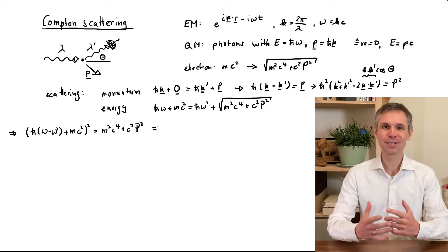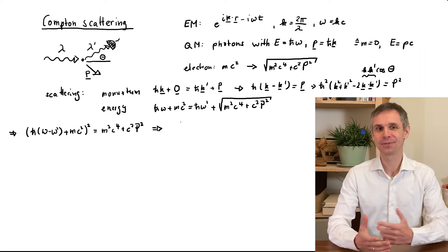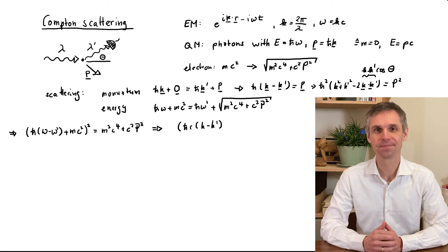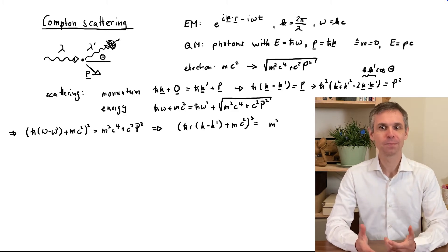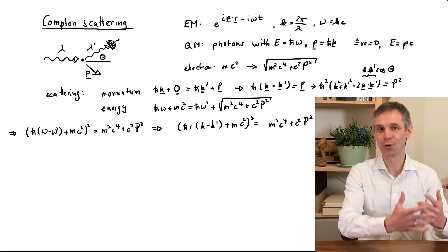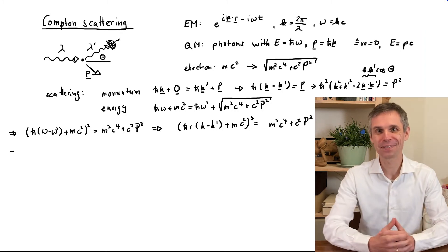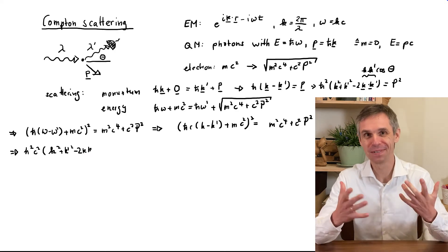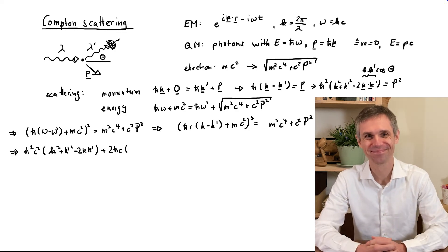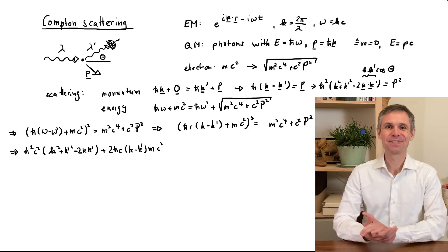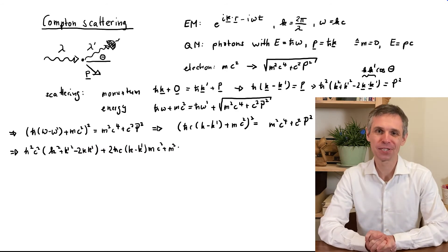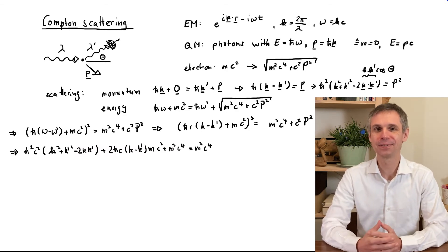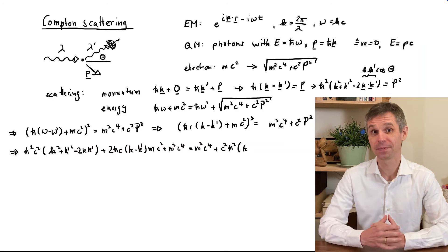Next, we replace the angular frequencies by the corresponding wave numbers. And now we multiply all terms out on one side of the equation — many, many terms. On the other side, we insert the expression that we obtained for the magnitude of the momentum of the electron.